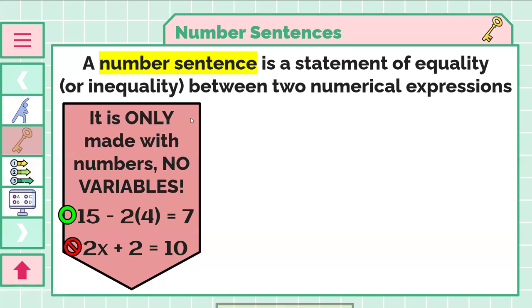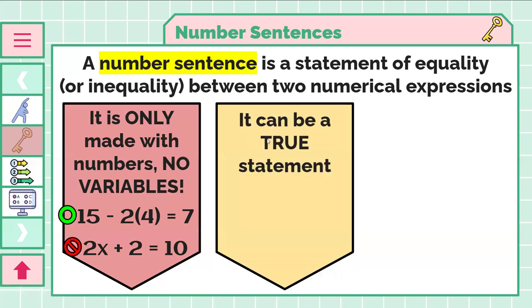Also, number sentences can be true statements. So if we have 2 times 3 plus 2 equals 8, well, 2 times 3 is 6, and 6 plus 2 is 8, so that is true, 8 does equal 8.